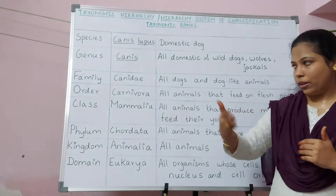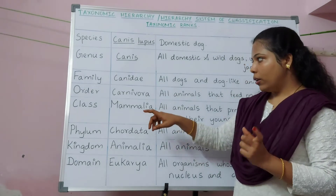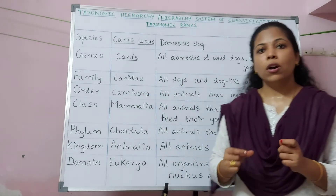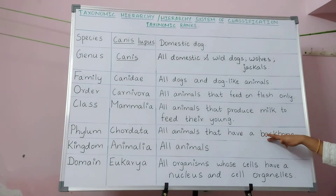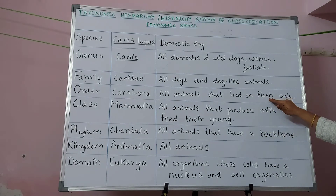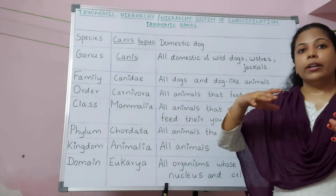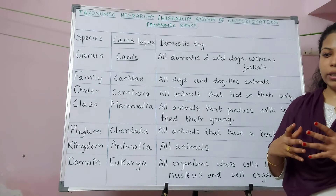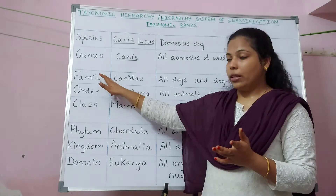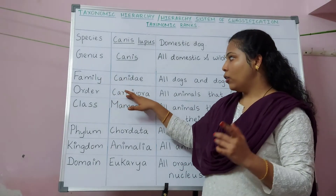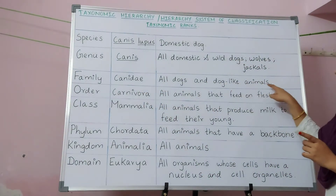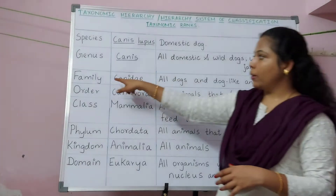Class Mammalia still includes animals with similarities and dissimilarities, so they are further classified into orders. One order under class Mammalia is Carnivora, which includes all animals that have a backbone and mammary glands but feed only on the flesh of other animals. Since these animals are different from each other, they are categorized into families. One such family is Canidae.